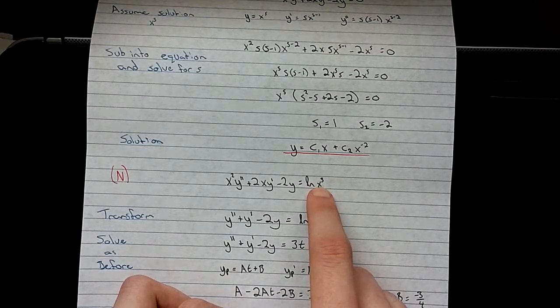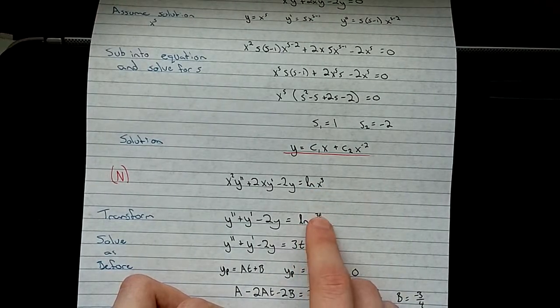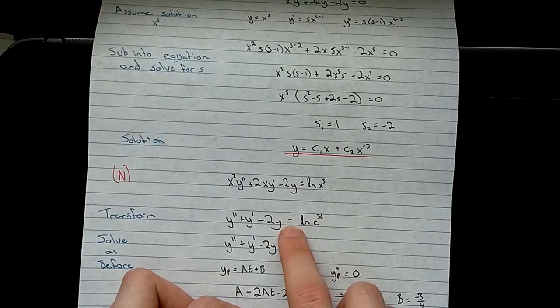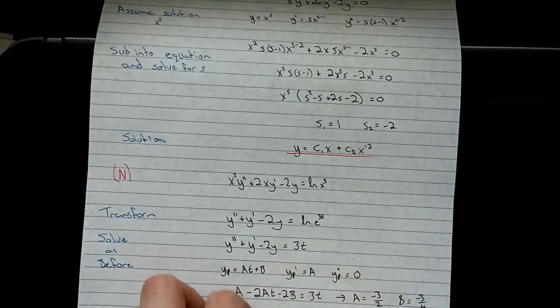And we have f at e to the t. So we've replaced x with e to the t. You get natural log of e to the 3t. And, of course, using log rules, 3t comes out. Natural log of e, that's just 1. Nice and simple.